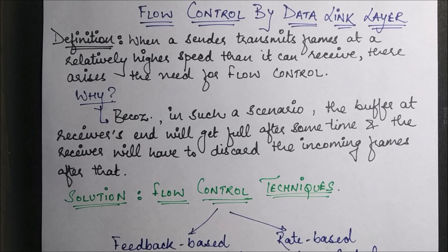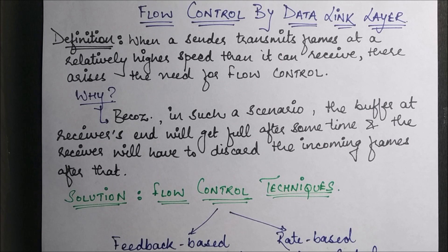At the physical layer we were talking in terms of bits, so we had data in terms of bits. Now when we have reached the data link layer, we have divided our data from bits into frames. So the sender is sending the data in the form of frames to the receiver. When the data is reaching the receiver, it is very important that both sender and receiver are synchronous to each other.